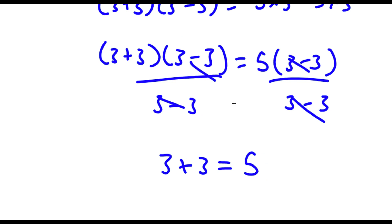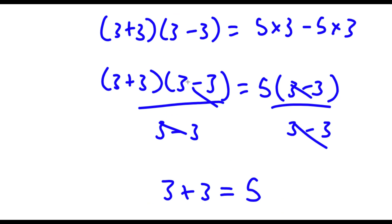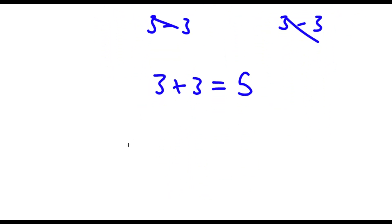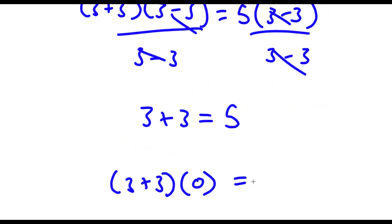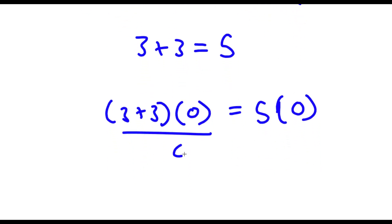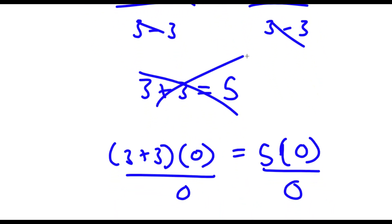So if you're wondering how this is actually wrong — well, it's because of this step over here: I divided both sides by 3 minus 3. But what is 3 minus 3? 3 minus 3 is simply equal to 0. So I have 3 plus 3 times 0 equal to 5 times 0. If I divide both sides by 0, that's 0 divided by 0, which is undefined — you can't cancel these out. That's where this equation is actually wrong, and 3 plus 3 does not equal 5.